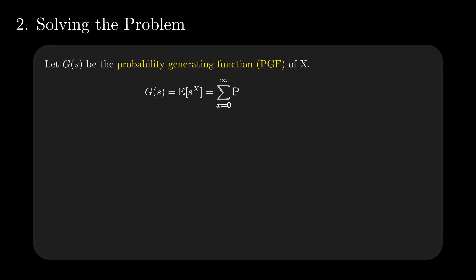One way to describe the sequence of values that the probability of X equals x can take is by using the probability generating function. Its definition is G of s equals the expectation of s to the power of X. In itself, s to the power of X is a random variable for which we can expand the expectation by the standard formula.